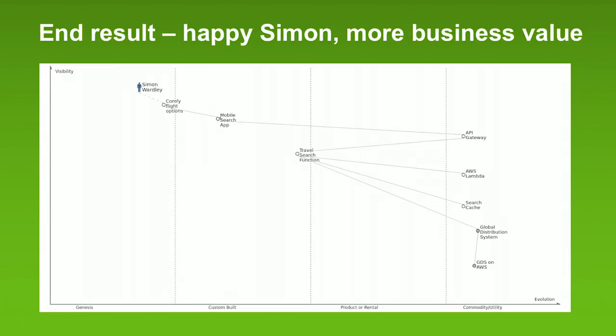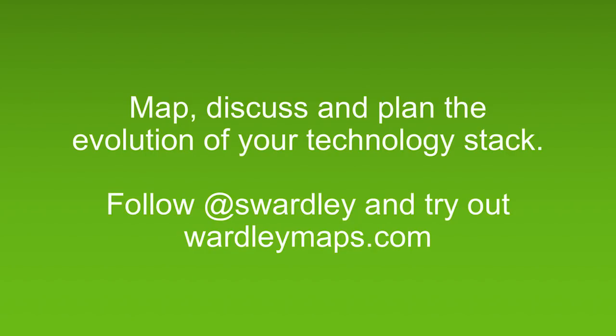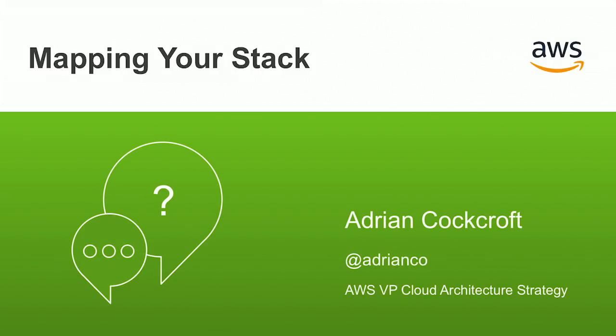That's a pretty simple way to map a fairly straightforward example into a new set of technologies meeting a bunch of different customer and business needs. Hopefully Simon would be a little bit happier using this — although he'd be even happier if his employer would buy him a business class ticket occasionally. I think the interesting thing here is you can use this technique to map, discuss, and plan the evolution of your technology stack. I advise you to follow Simon Wardley on Twitter and try wardleymaps.com. He has a Medium blog with lots of detailed examples, and he's in the process of writing a book by blogging it one chapter at a time. Well, hopefully you found that interesting — that's it for this month. Thanks very much.